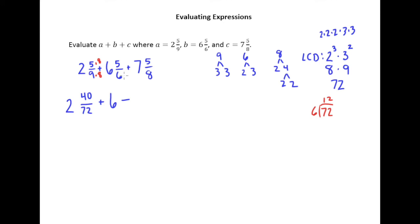So we'll multiply top and bottom here by 12, and so what we end up with is 6 times 12 is 72, 5 times 12 is 60, and then plus 7, and I know that 8 times 9 is 72. So 5 times 9 is 45, so this is what we have.